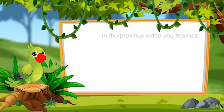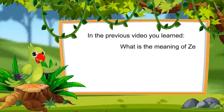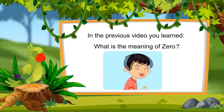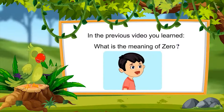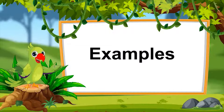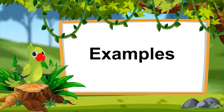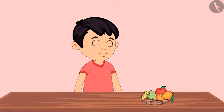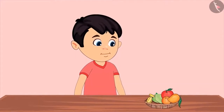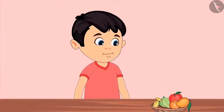So children, in the last video, you learned what is the meaning of zero. And when there is not a single object left, it is called zero. Children, in this video, we will see some examples of zero, in which we will develop an understanding of objects decreasing one by one. Now Chotu has started eating fruits instead of sweets. Let's see which fruit he wants to eat today.